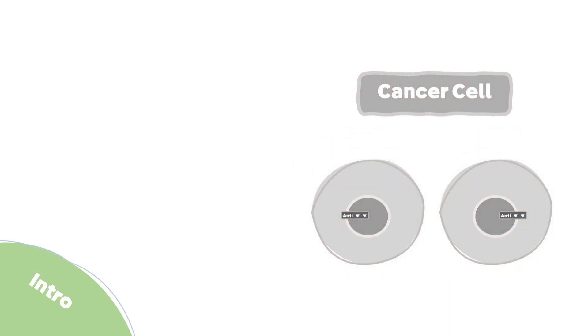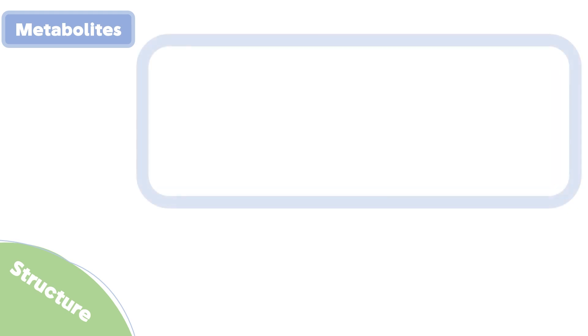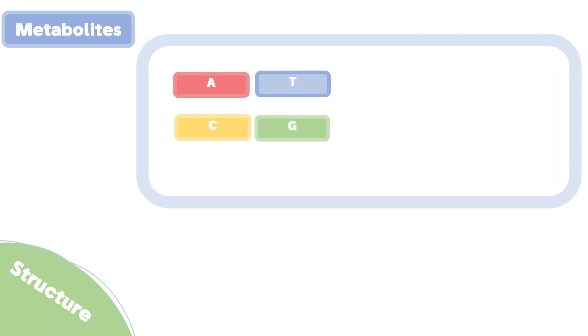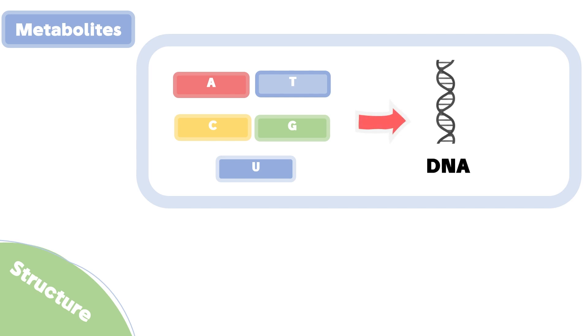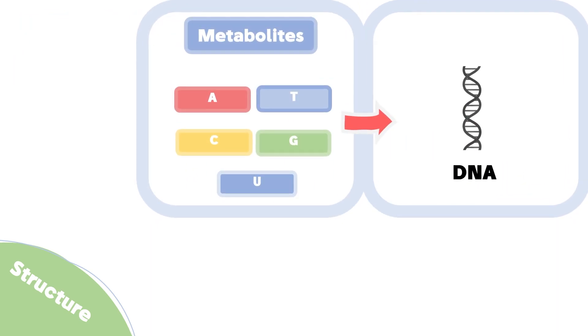Leading to their death. Now let's move to the structure. But first, do you know what a metabolite is? A metabolite can refer to a nucleotide or an intermediate form of it needed for DNA and RNA synthesis, and the same goes for amino acids used to make proteins. We will only focus on the DNA metabolites.